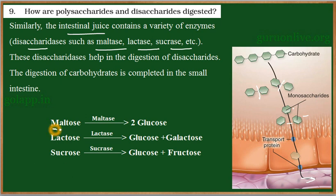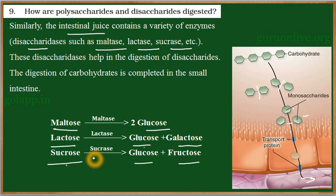The disaccharides present are maltose, lactose, and sucrose. Maltose contains two glucose units. Lactose contains one glucose and one galactose. Sucrose contains one glucose and one fructose. The enzyme maltase acts upon maltose and releases two glucose molecules. Lactase acts upon lactose and converts it into glucose and galactose. Sucrase acts upon sucrose and releases glucose and fructose. So glucose, galactose, and fructose are all monosaccharides, and they will be absorbed by the blood vessels and transported.